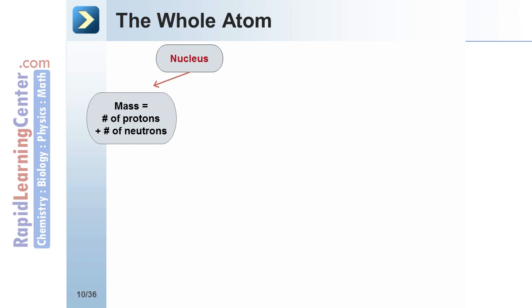The nucleus has most of the mass of the atom. The mass of the atom can be found by adding the number of protons plus the number of neutrons. The nucleus has a charge equal to the number of protons.